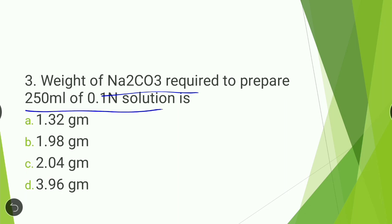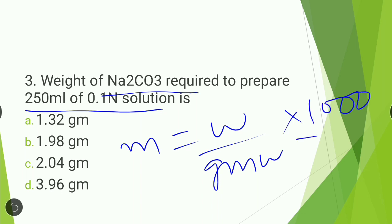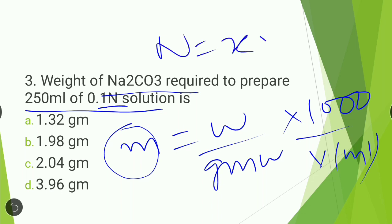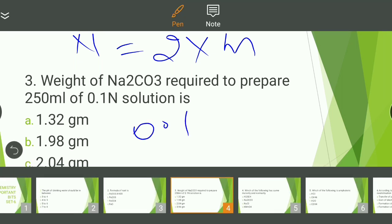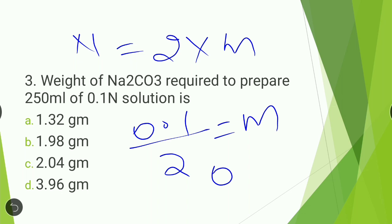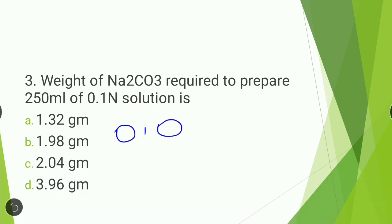Next question: weight of Na2CO3 required to prepare 250 ml of 0.1 normal solution. Using the molarity formula: molarity = weight / (gram molecular weight) × 1000 / volume in ml. Since normality is given, normality = X factor × molarity. X factor for Na2CO3 is 2, so 0.1 = 2 × molarity, giving molarity = 0.05.